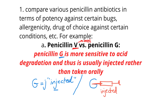Moving on to penicillin V. The V looks like a mouth — if we draw two eyes and a nose, it is a mouth, which means it is an oral drug, or that penicillin V is taken orally. So just remember this image of the V looking like a mouth, which means penicillin V is a drug taken orally.